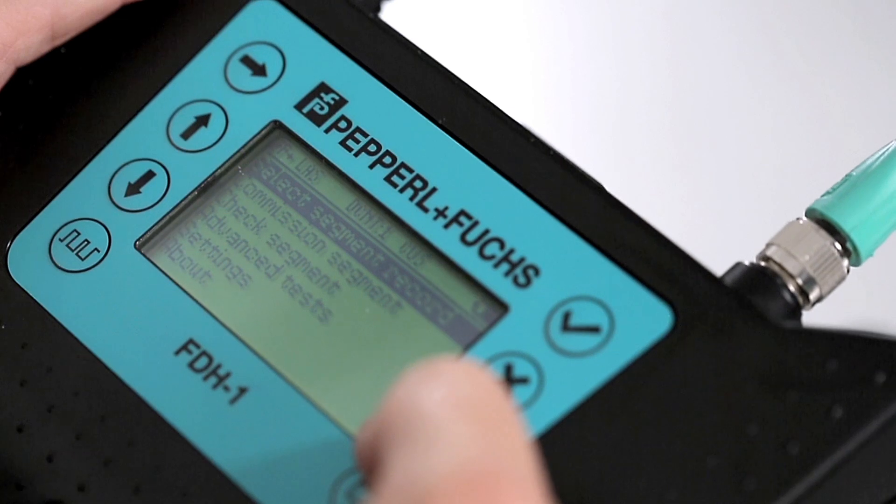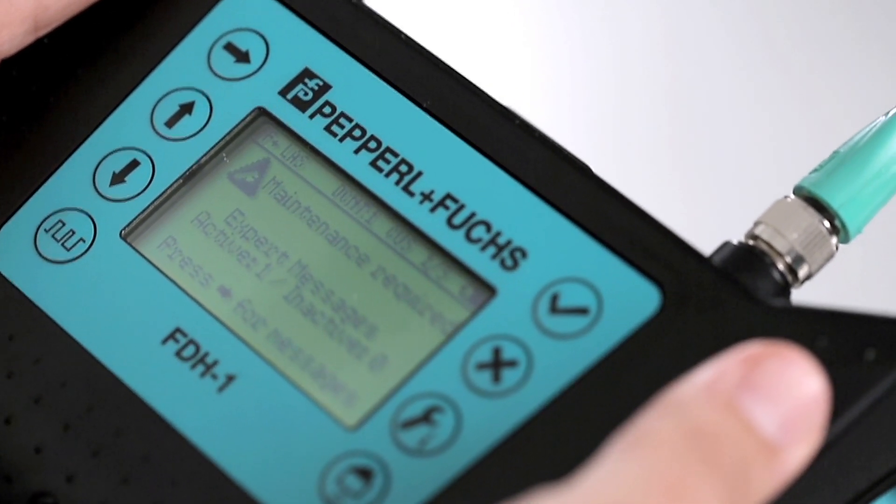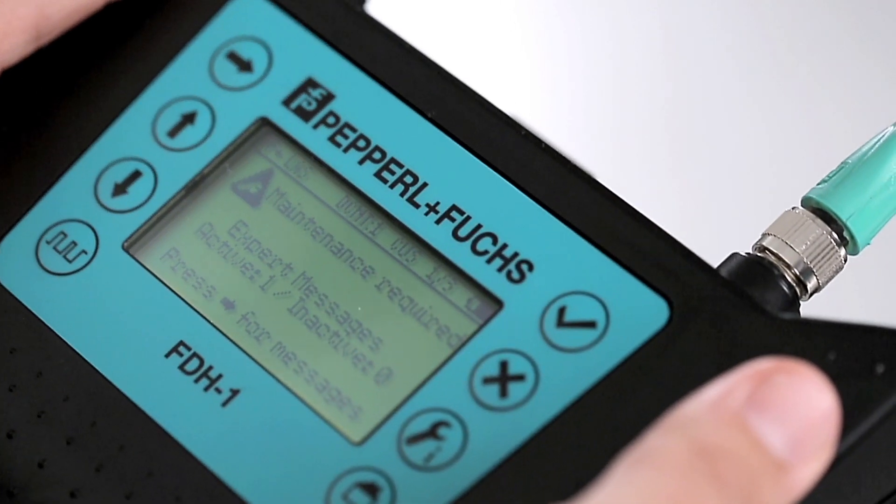With just one push of a button, the quick check mode fires up. The FDH1 now continuously monitors and evaluates the installation quality.